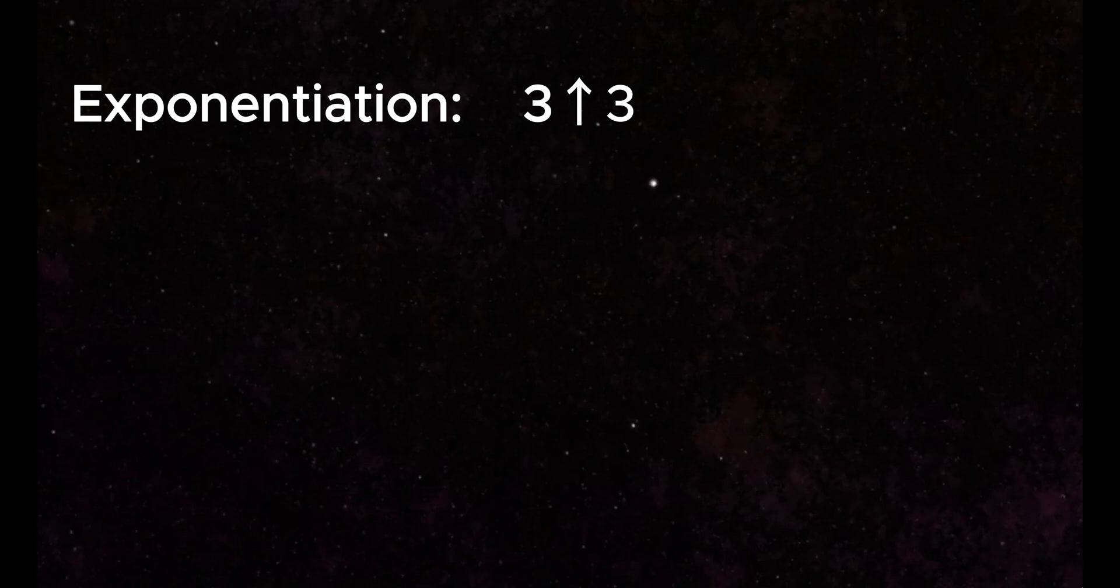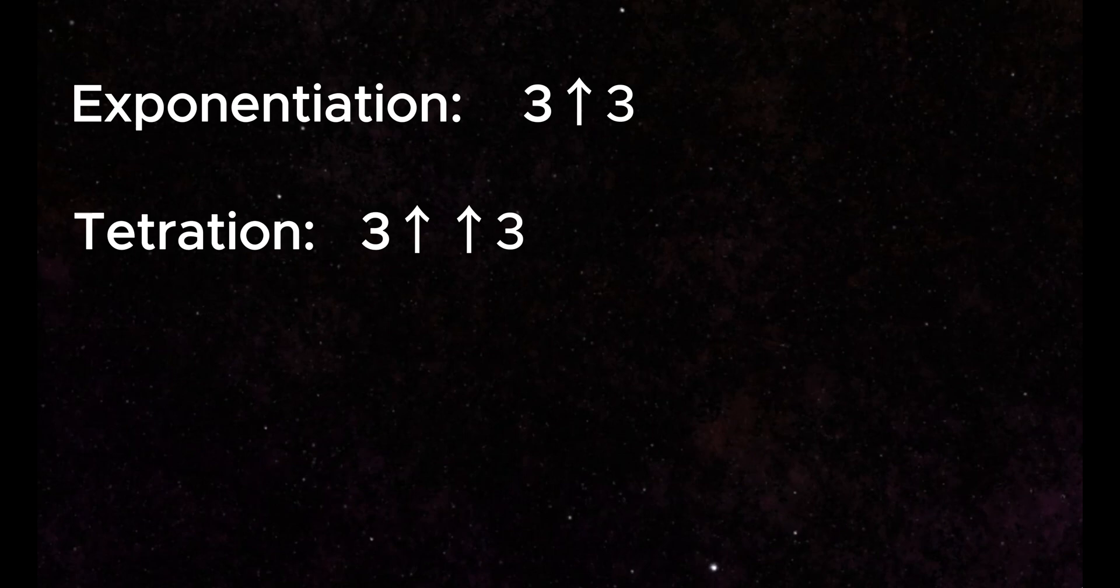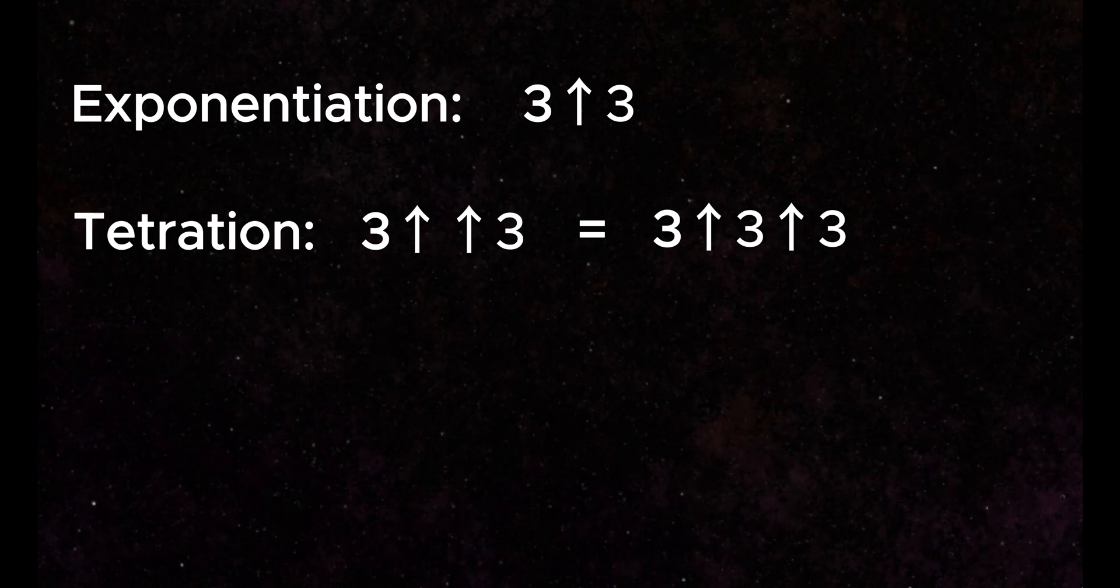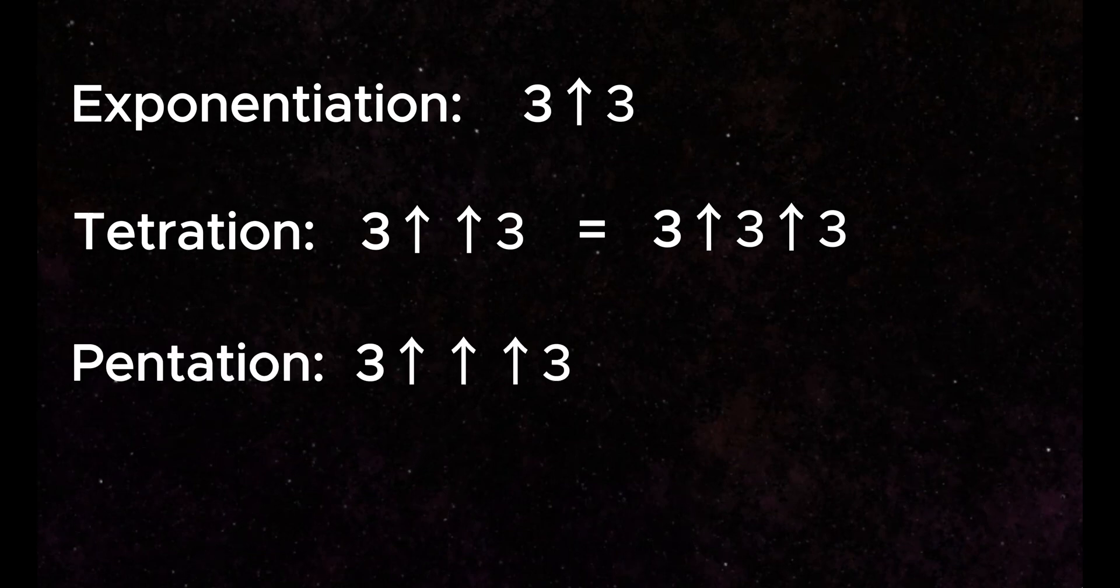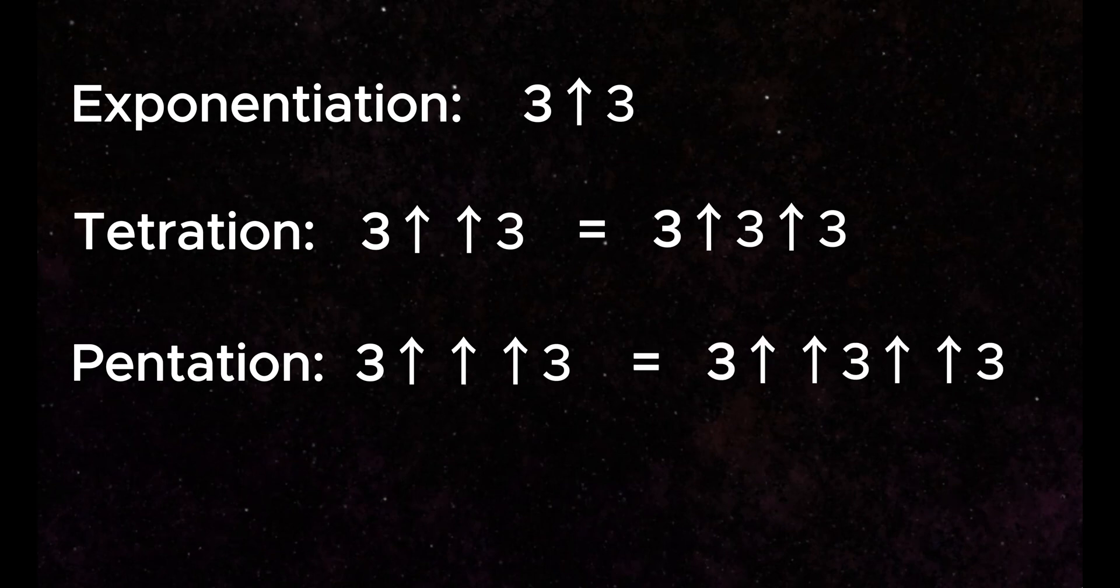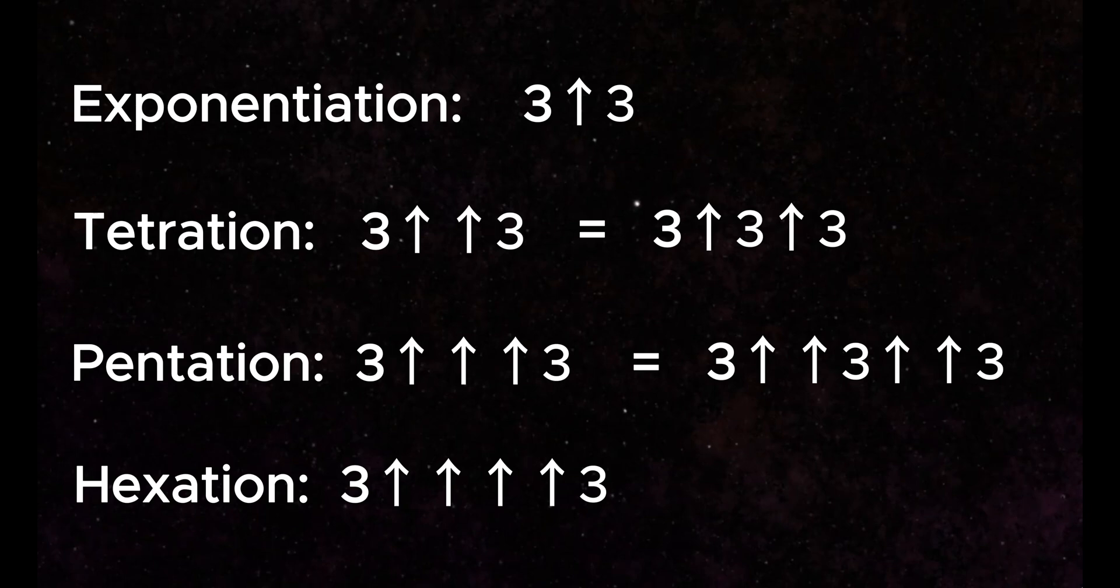Exponentiation can be written using a single arrow. Tetration uses a double arrow and describes how many single arrows are used. Likewise, pentation uses a triple arrow and describes how many double arrows are used. Hexation is next, using a quadruple arrow, and this pattern continues on.